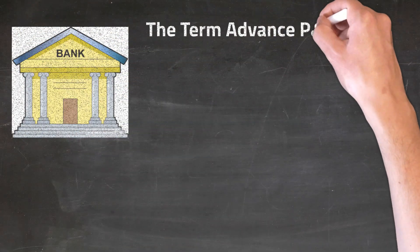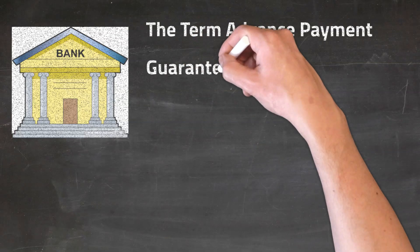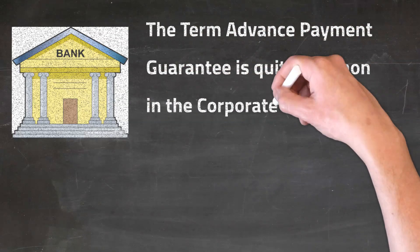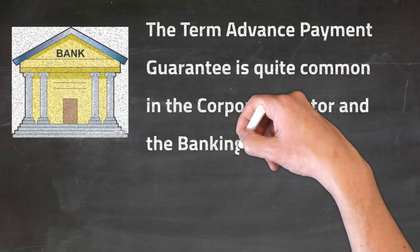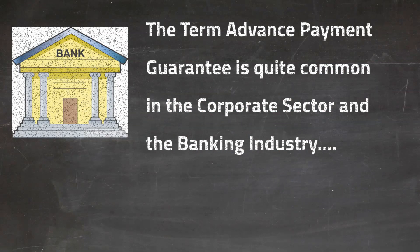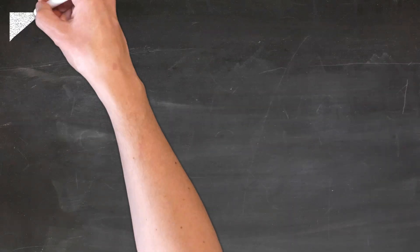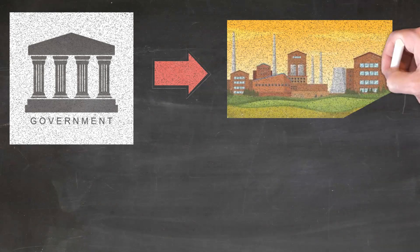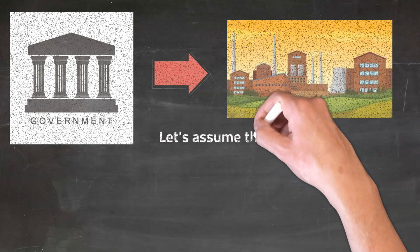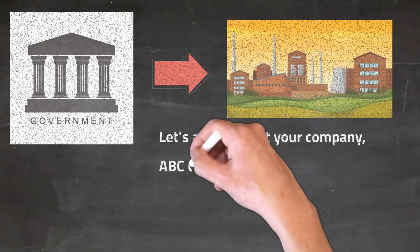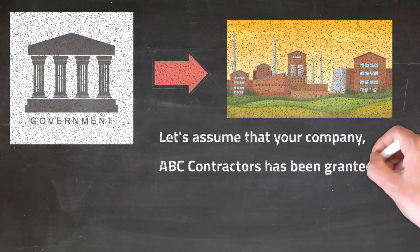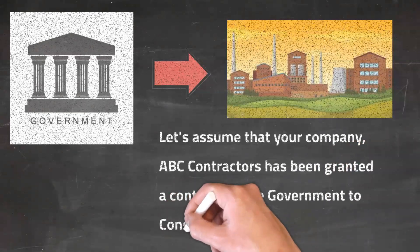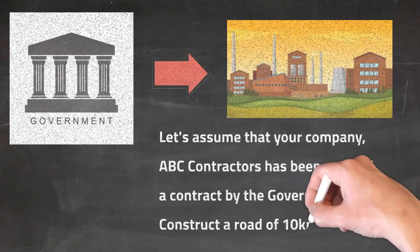The term advance payment guarantee is quite common in the corporate sector and the banking industry. Let's try to understand what an advance payment guarantee is using an example. Let's assume that your company, ABC Contractors, has been granted a contract by the government to construct a road network of 10km.